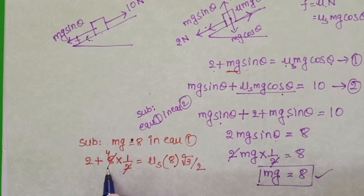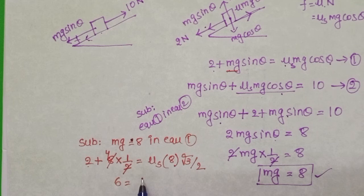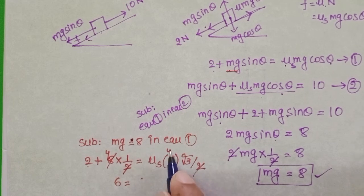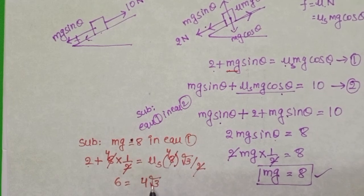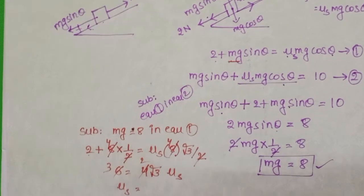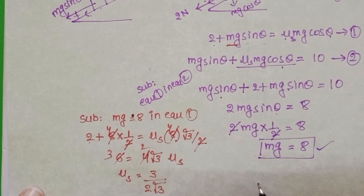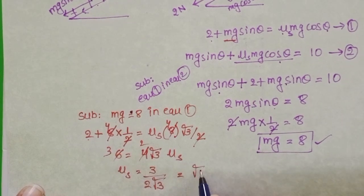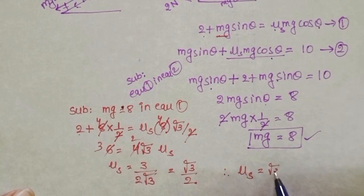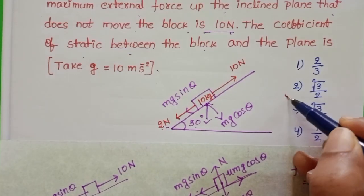Simplifying: 2 + 4 = 6 on the left side. On the right side, 8 × (√3/2) = 4√3. So 6 = 4√3 × μs, giving μs = 6/(4√3) = 3/(2√3) = √3/2. Therefore, the coefficient of static friction is √3/2, and the second option is correct.